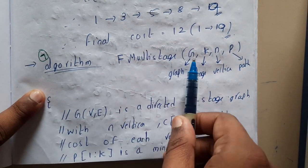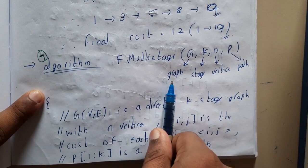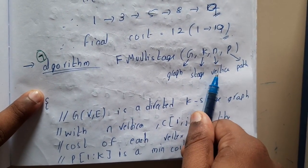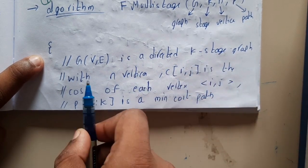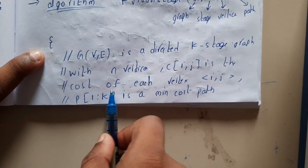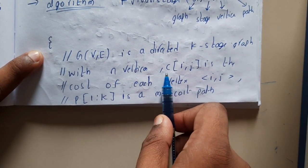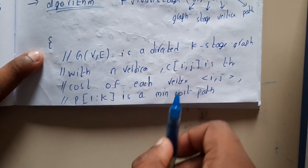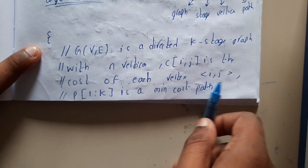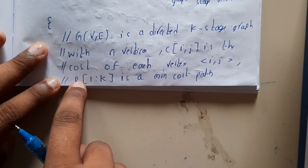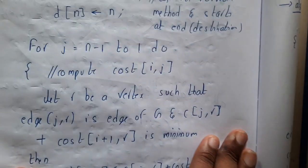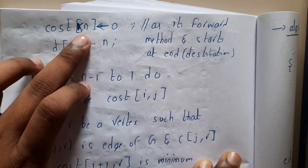The forward approach algorithm signature is: forward approach of multi-stage graph(G, K, N, P), where G is the graph, K is the number of stages, N is the number of vertices, and P is the path. G(V, E) is a directed K-stage graph with N vertices. C(i, j) is the cost of each edge i to j. P(i, k) is the minimum cost path — P is an array in which you are storing the minimum path.